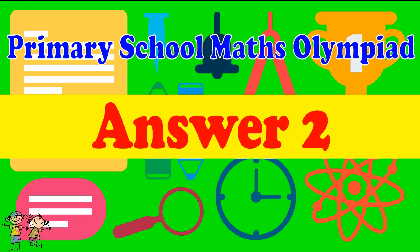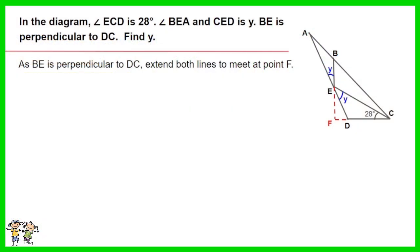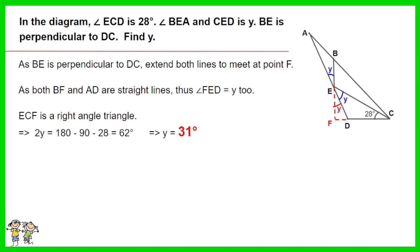Answer for question 2. As BE is perpendicular to DEC, extend both lines to meet at point F. As both AF and AD are straight lines, thus angle FED equals Y2. BCF is a right-angled triangle. Thus 2Y equals 180 minus 90 minus 28. Y is 31 degrees.